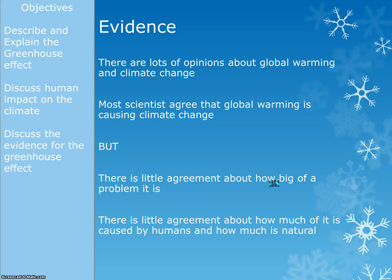Evidence would be concrete facts — a table of data showing numbers going up, a table of emissions, or a graph of emissions versus temperature showing a positive correlation. Opinions would be statements starting with 'I believe' or 'I think.' The exam often asks you to identify the difference between evidence and opinions in the context of the greenhouse effect and climate change. Look at the evidence for yourselves and decide what you think we need to do about it — don't just let policy makers decide for you. If you have any questions, do not hesitate to ask, and I will see you all next lesson.